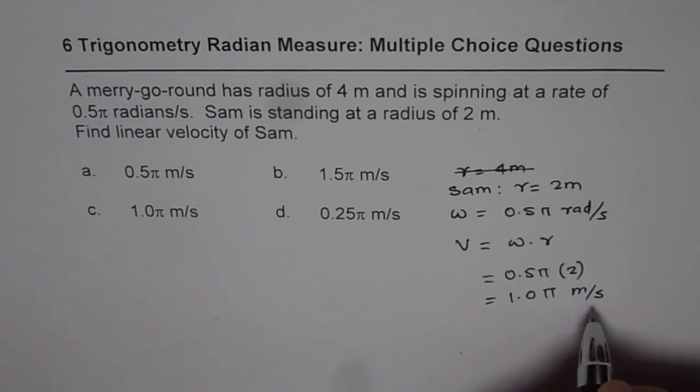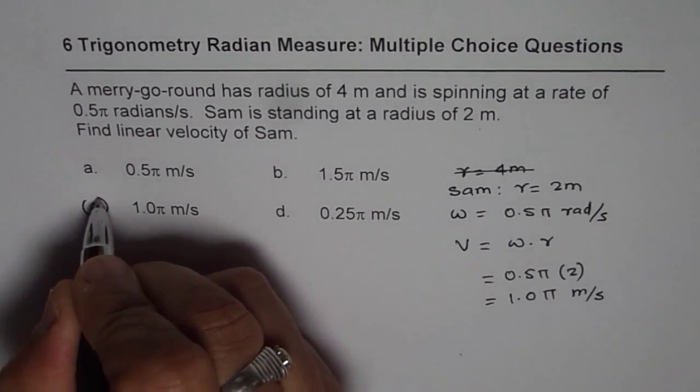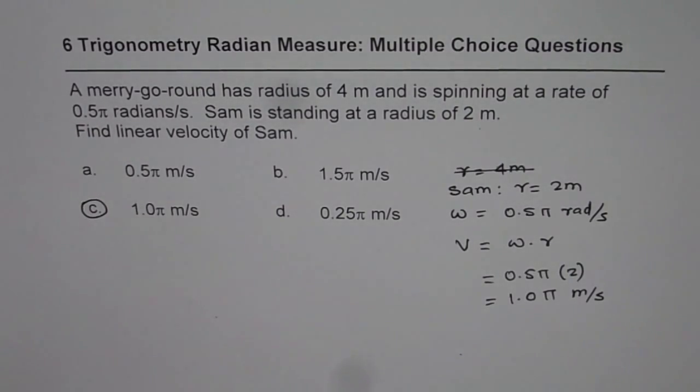So 1.0 pi meters per second — option C is the right answer.